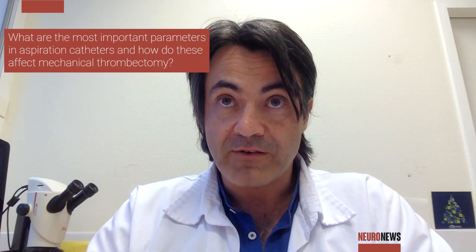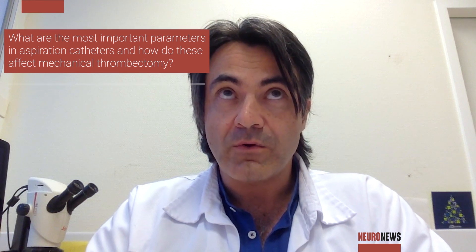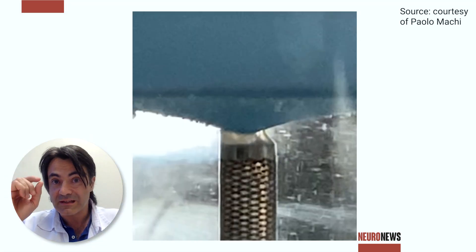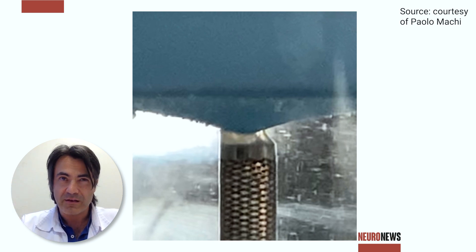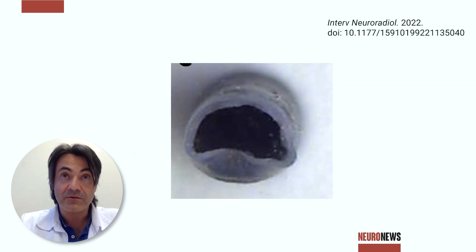Flow rate and aspirational force are related to specific parameters, primarily the diameter of the device and also the behavior of the catheter. We have cases in which the distal tip of the catheter collapses under aspiration, which reduces the diameter of the distal tip, and so with the reduced diameter we also have reduction of the flow rate and aspiration force.